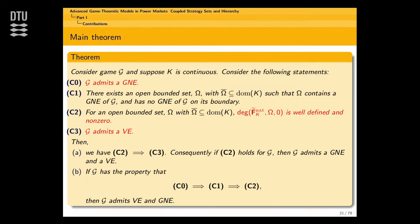If G has the property that C0 implies C1 implies C2, then G admits both a VE and a GNE. This condition is more technical. The main requirement is to go from C0 to C1 to C2 to C3. We know that if the degree is non-zero, then G admits a VE. We first show this and then show all the way from admitting a GNE to the degree being non-zero.